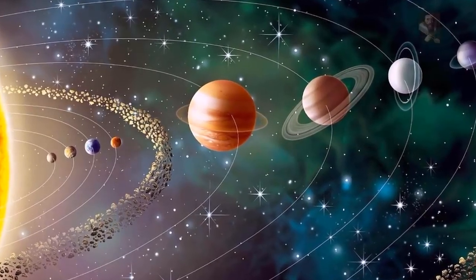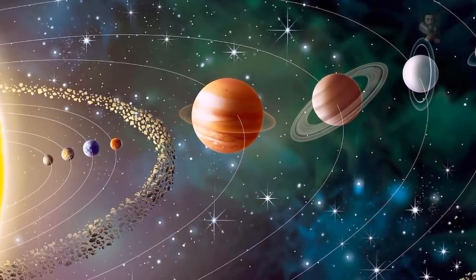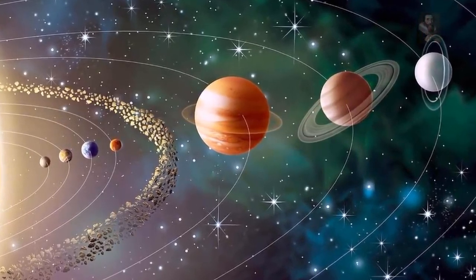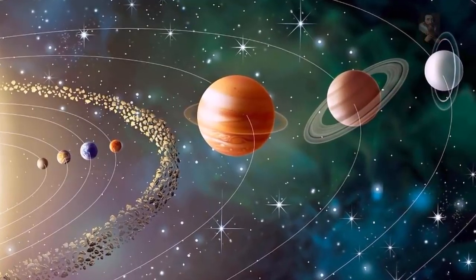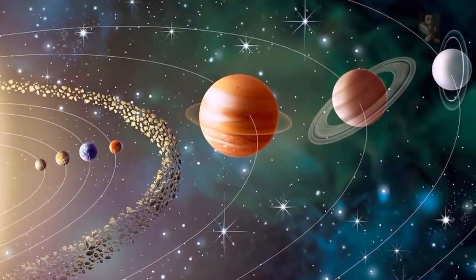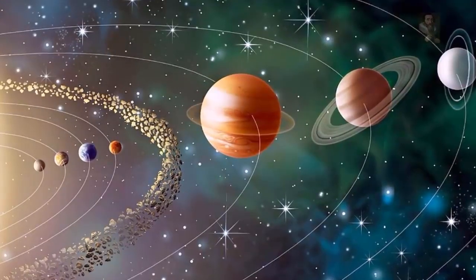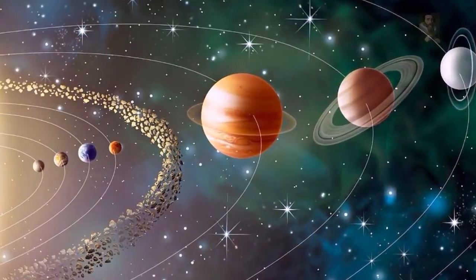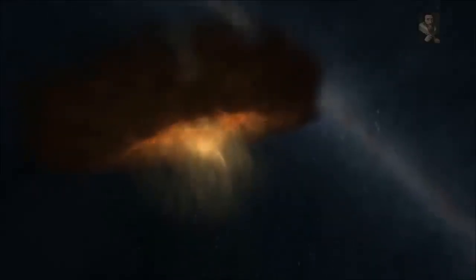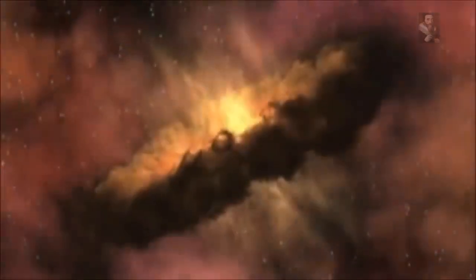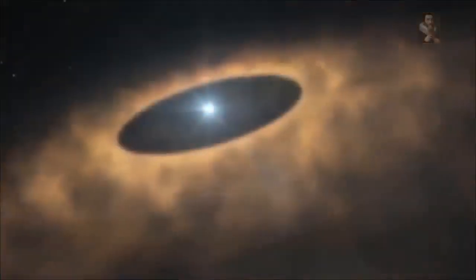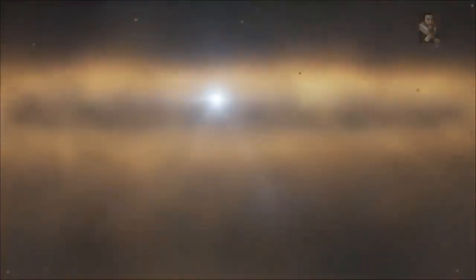For some reason, carbon-rich material from the outer solar system has been prevented from migrating into the inner solar system. One explanation for this barrier is that it arose during the formation of Jupiter. As the gas giant gathered mass, the theory proposes it prevented carbon-rich dust and sub-meter pebbles from reaching the inner solar system.